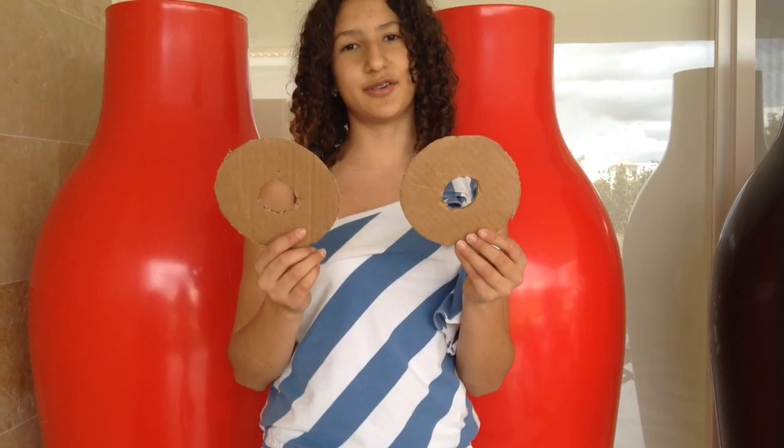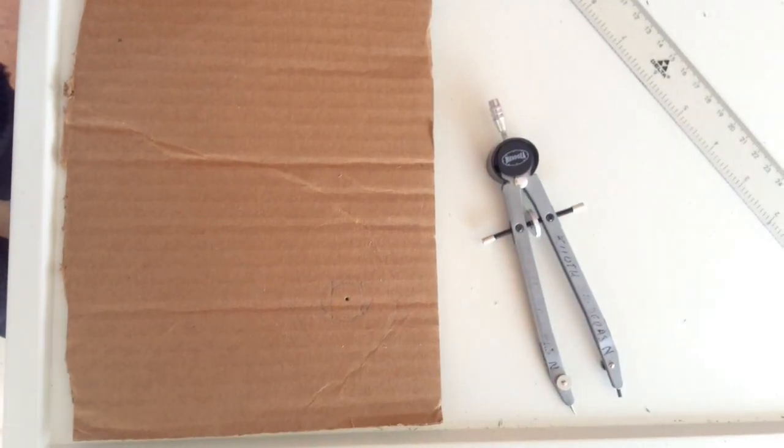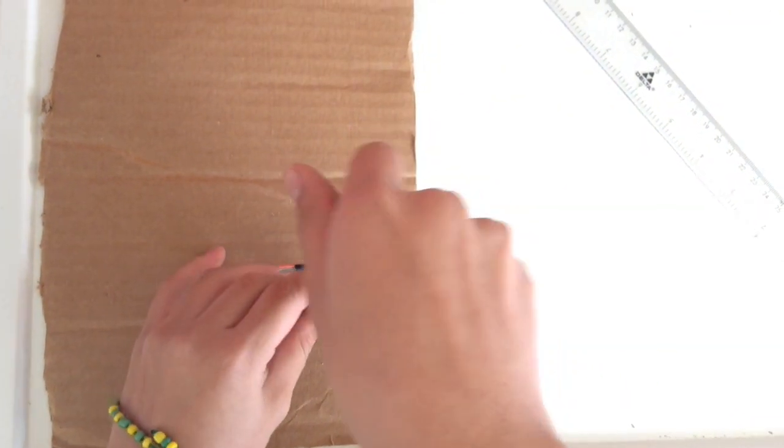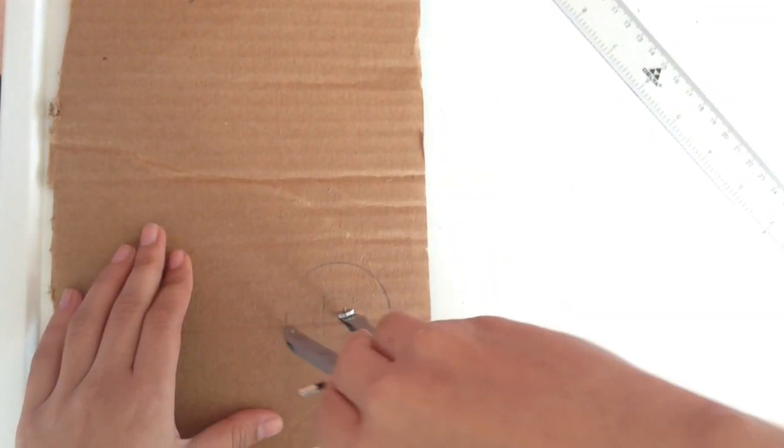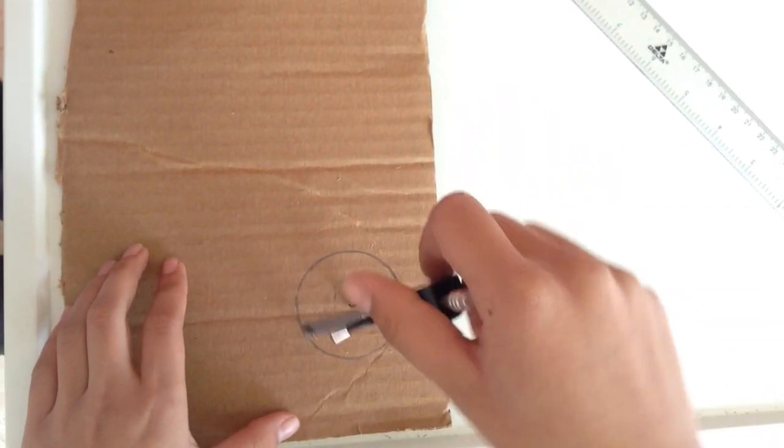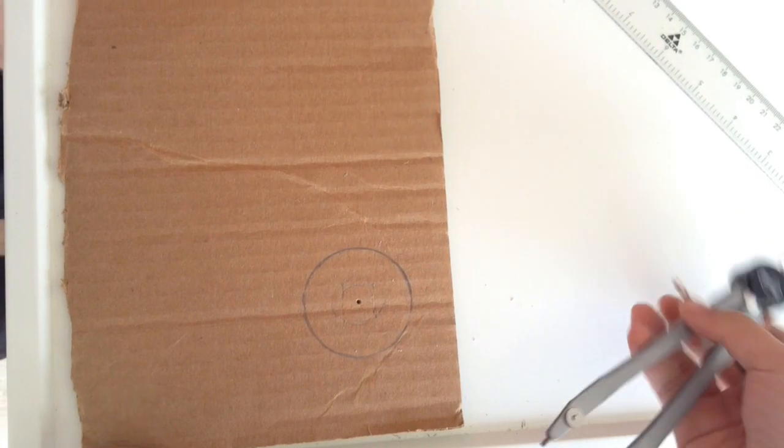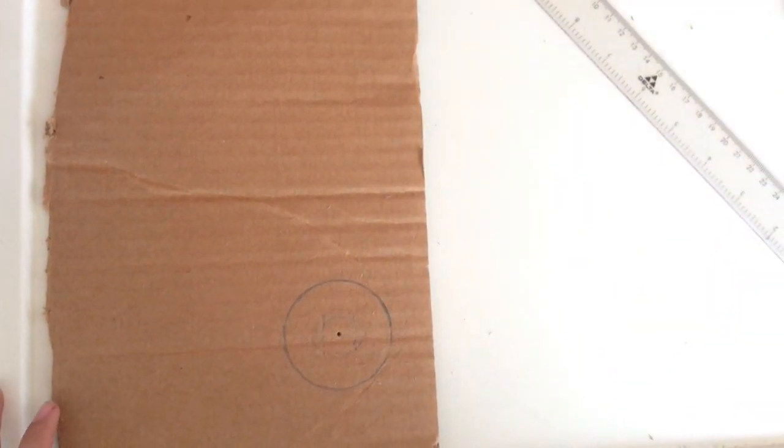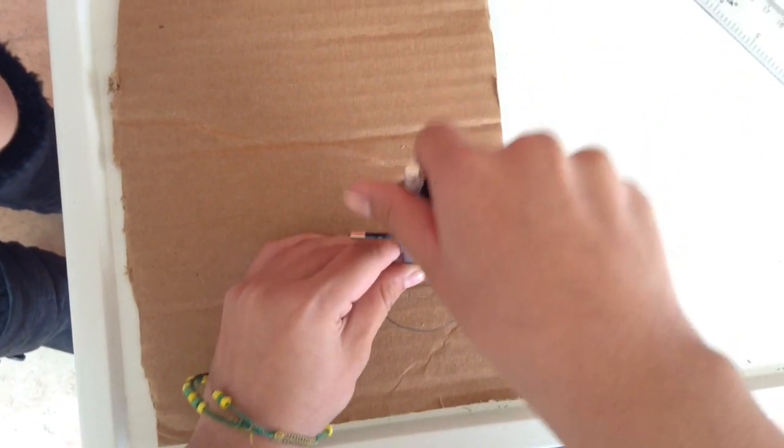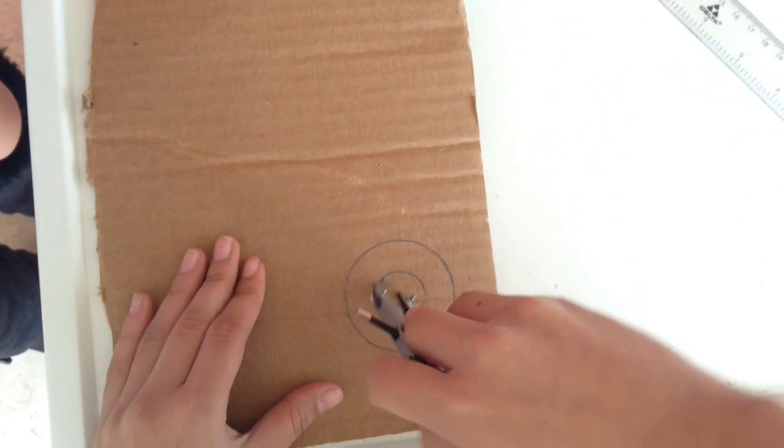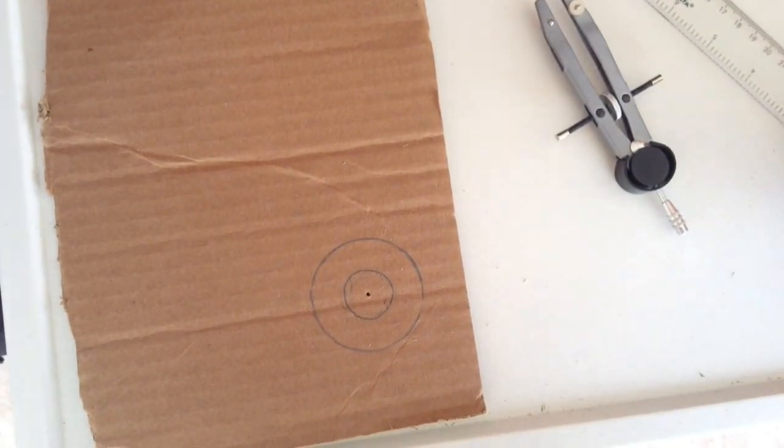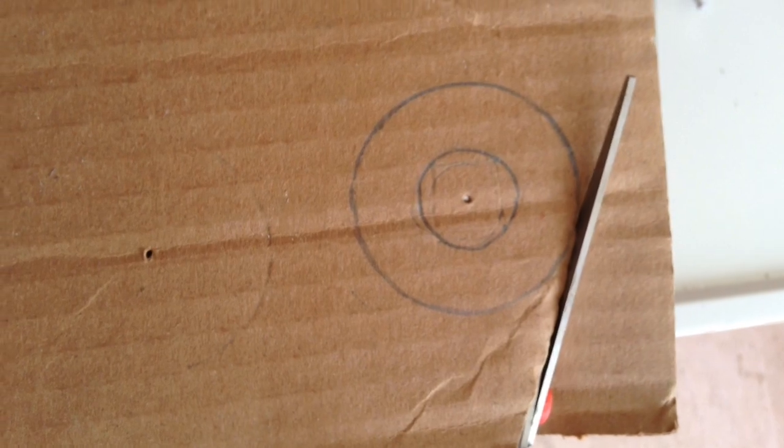Now you have two circles. Now you have to make a circle with a radius of 2.5 cm like this one. And inside of it, you have to make a circle with a radius of 1 cm like this one. Cut it and repeat this process two more times.